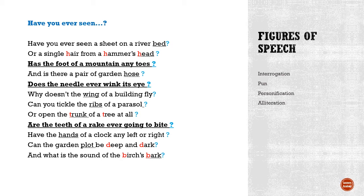The next figure of speech is alliteration. All the letters that are repeated in the same sentence are highlighted in red. In the second line you can see: hair, hammer, head. When a letter is repeated for better poetic effect to bring about a musical tone in the poem, that figure of speech is called alliteration.